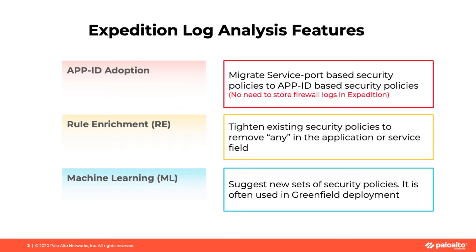The third feature is the Machine Learning feature. This feature is often used in a greenfield environment when you are not clear on what security policies are needed. You might have a very permissive security policy to allow all outbound traffic from subnet A to any. By enabling the Machine Learning feature, Expedition will analyze the actual firewall traffic logs and auto-suggest a new set of security policies required for the environment.